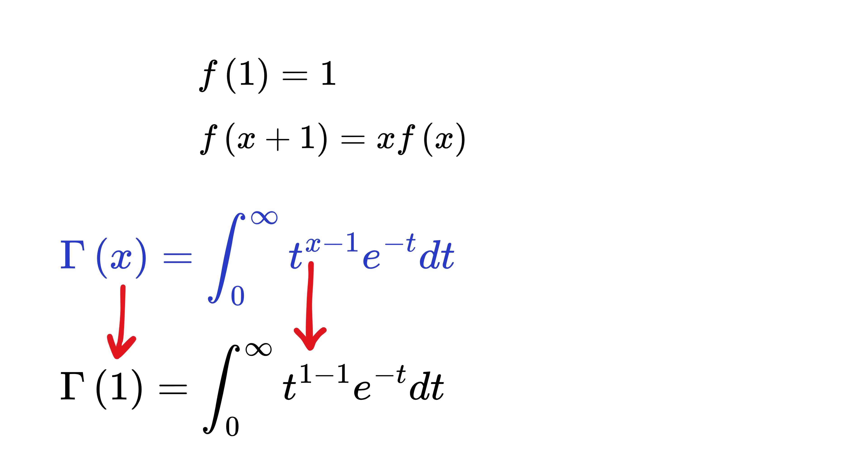Put x equals 1 and you get this integral which is super duper easy to solve and its value is 1. Now if you put x as x plus 1, you get gamma of x plus 1 as this, where this power of t will now be x plus 1 minus 1, or simply x.